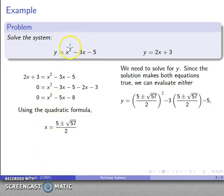So again, the solution is going to make both equations true. So I can use either equation to find the y value. So I can drop this thing into this first equation, y equals x squared minus 3x minus 5, I can evaluate this. Or I can drop this x value into this equation and find y equals 2 times x plus 3. Your choice.